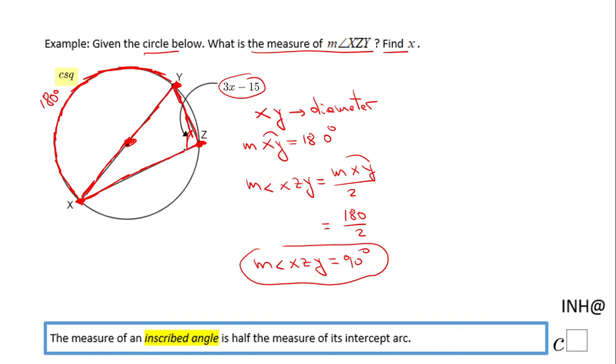So as a rule, whenever you see a picture like this - an inscribed angle where the other two endpoints of the angle represent the endpoints of a diameter - this angle will always be 90 degrees.